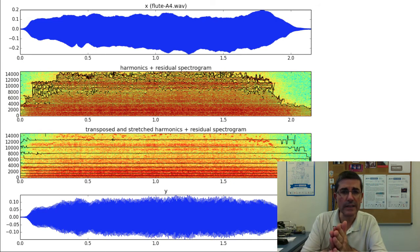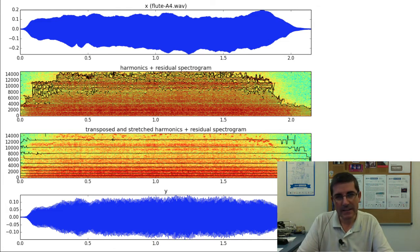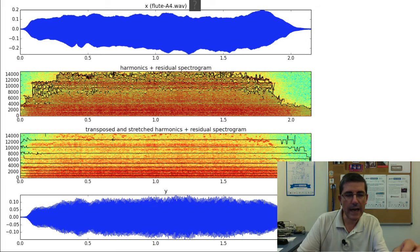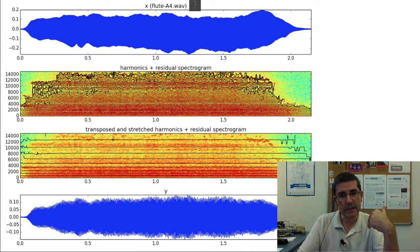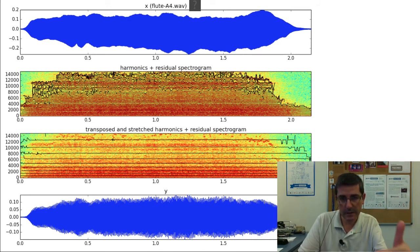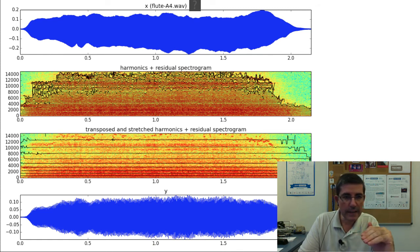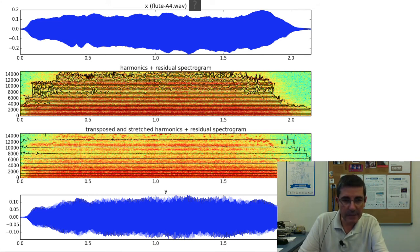Let's listen to a sound in which we have applied some stretch and transpose transformation. It's a flute sound, an A4. Below the spectrogram we see the harmonics that have been identified on top of the residual spectrum of the original signal. The residual is left as is — the background spectrogram is exactly the same — and we're just modifying the harmonics, which have been stretched and at the same time transposed a little bit.